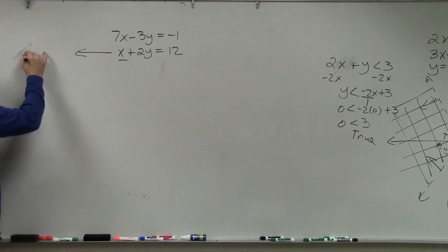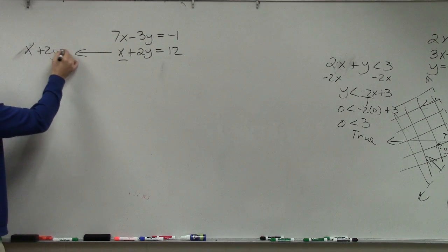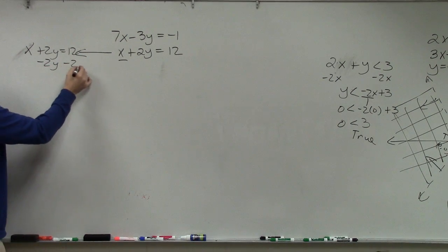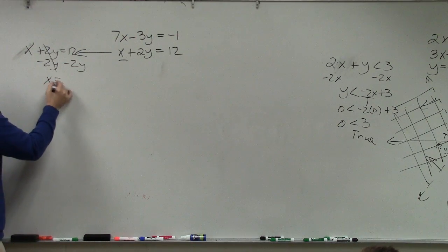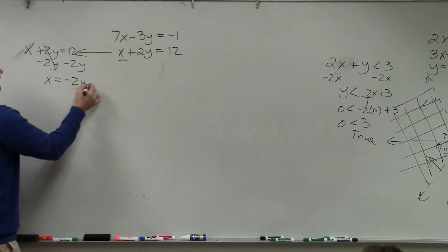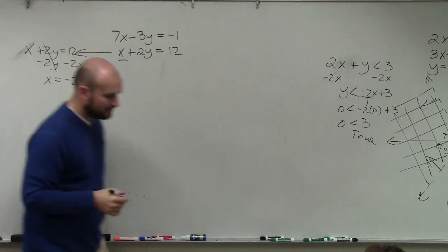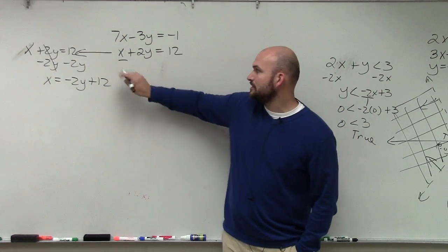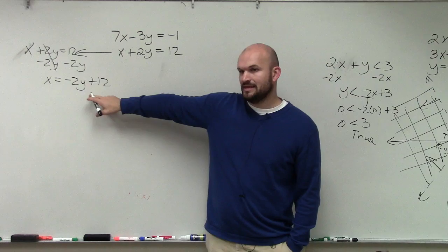So I have x plus 2y equals 12. To solve for x, I subtract 2y. x equals negative 2y plus 12. Does everybody see? Now, all I did was I took this equation and rewrote it like this.